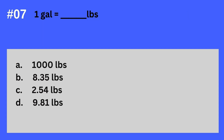Question 7. 1 gallon is equal to how many pounds? A. 1,000 pounds. B. 8.35 pounds. C. 2.54 pounds. D. 9.81 pounds. The answer? It's B. 8.35 pounds. 1 gallon is equivalent to 8.35 pounds.